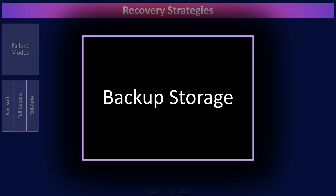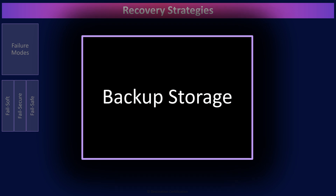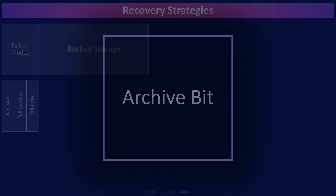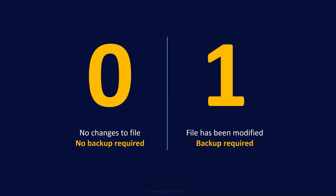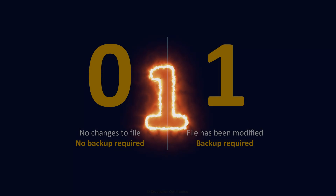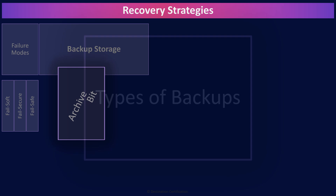Now let's start with backup strategies — the various methods we can use to back up data in the event of hardware failures. Before we get into discussing the strategies, let's talk about an important concept known as the archive bit. Metadata is data about data, and the archive bit is an example of metadata. Every file on a computer has an archive bit associated with it. If the archive bit is set to zero, no backup is required. An operating system will automatically flip the archive bit to one whenever a file is created or modified, meaning the file needs to be backed up.